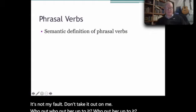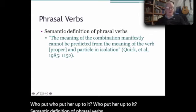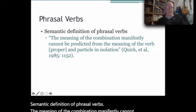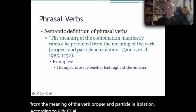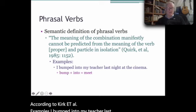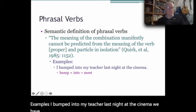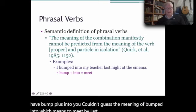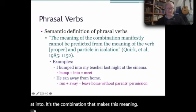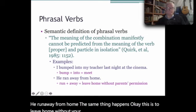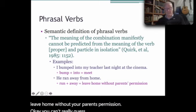Semantic definition of phrasal verbs. The meaning of the combination manifestly cannot be predicted from the meaning of the verb proper and particle in isolation, according to Quirk et al. Examples. 'I bumped into my teacher last night at the cinema.' We have 'bump' plus 'into.' You couldn't guess the meaning of 'bumped into,' which means to meet, by just looking at 'bump' or 'into.' It's the combination that makes this meaning. 'He ran away from home.' The same thing happens. This is to leave home without your parents' permission. You can't really guess that from 'run' and 'away' in isolation.